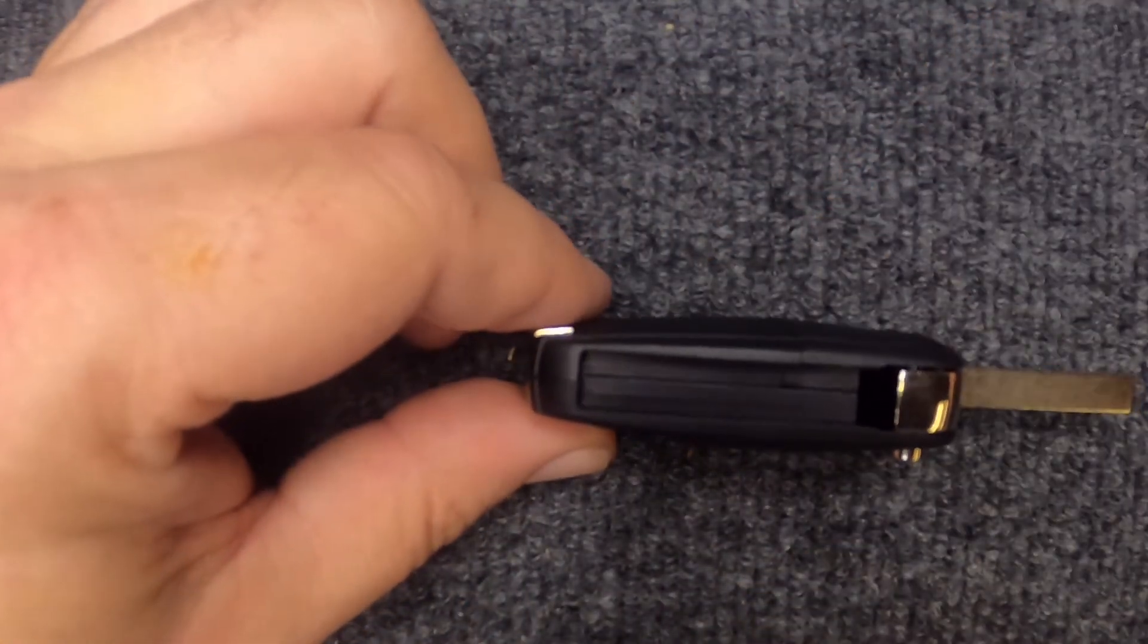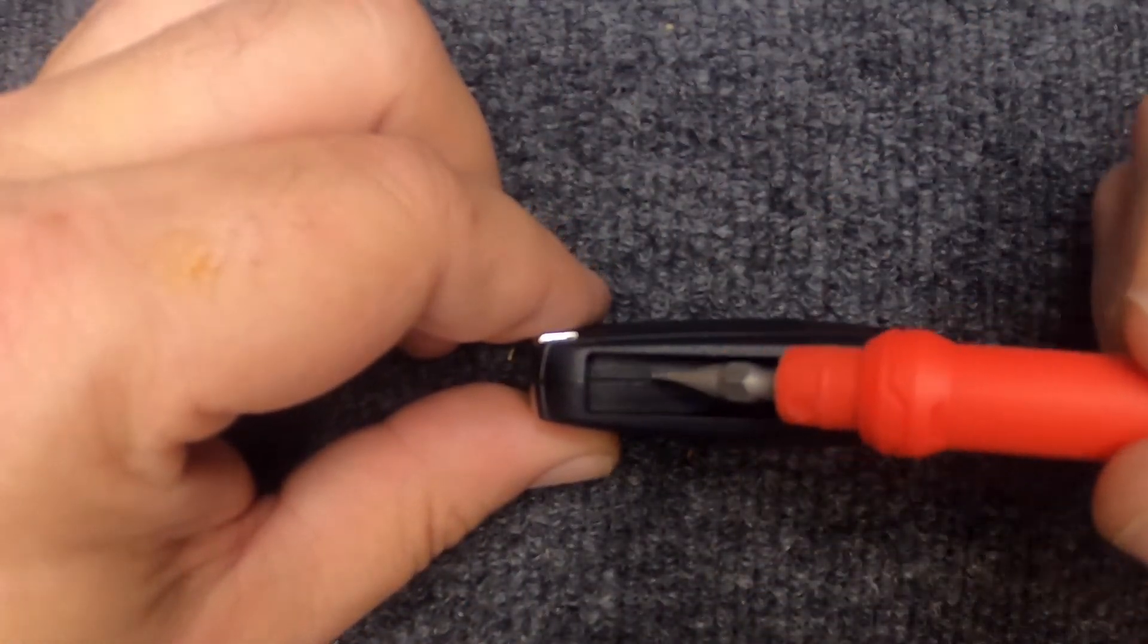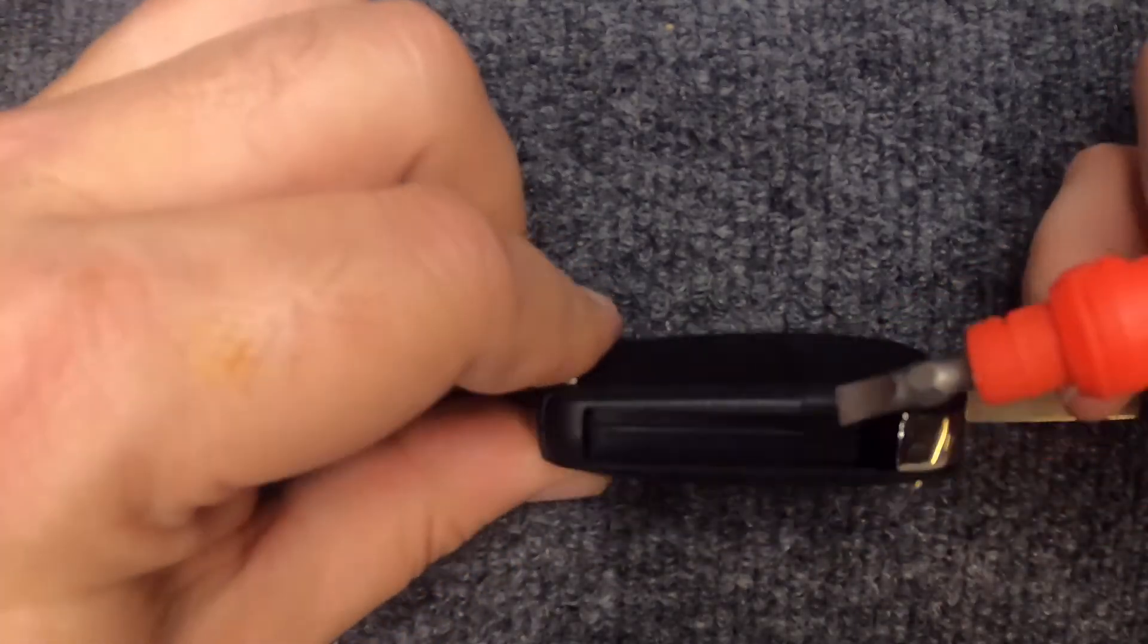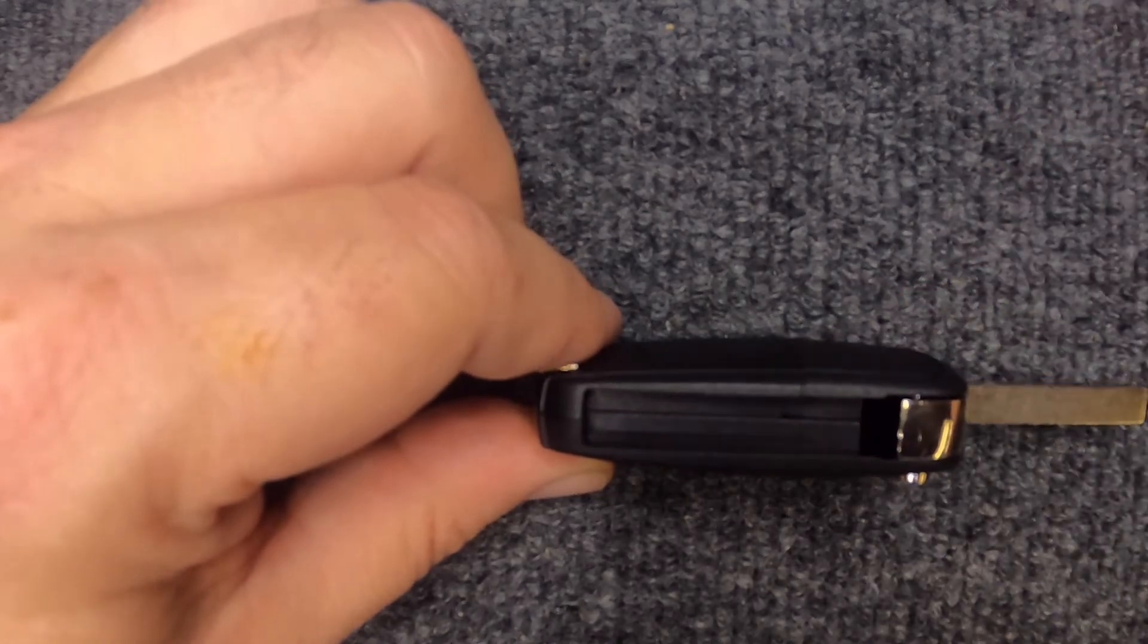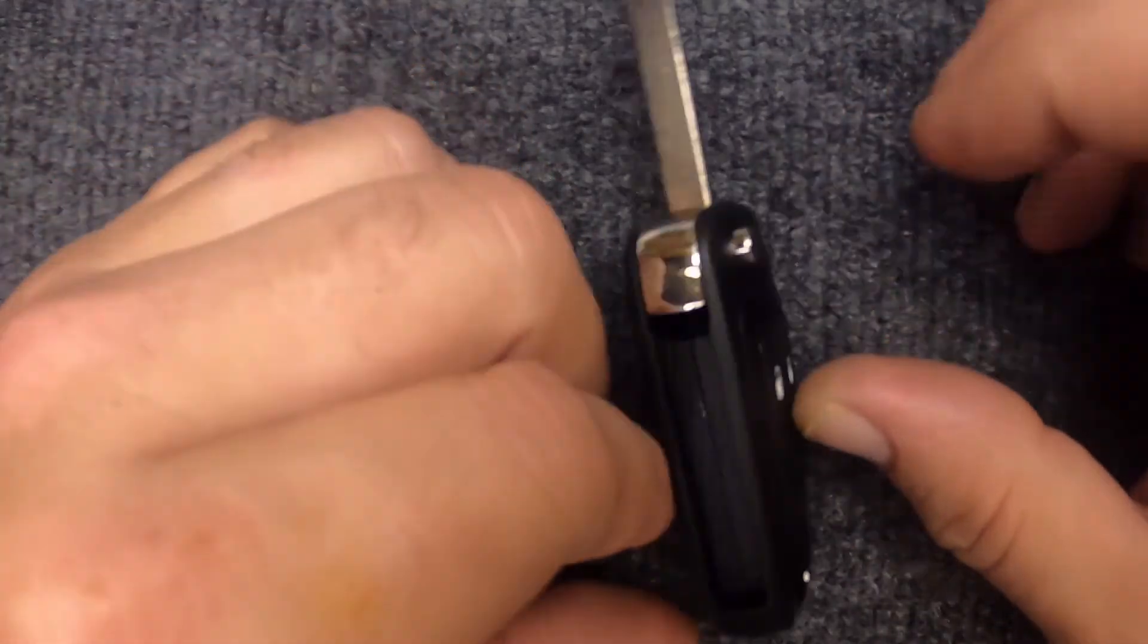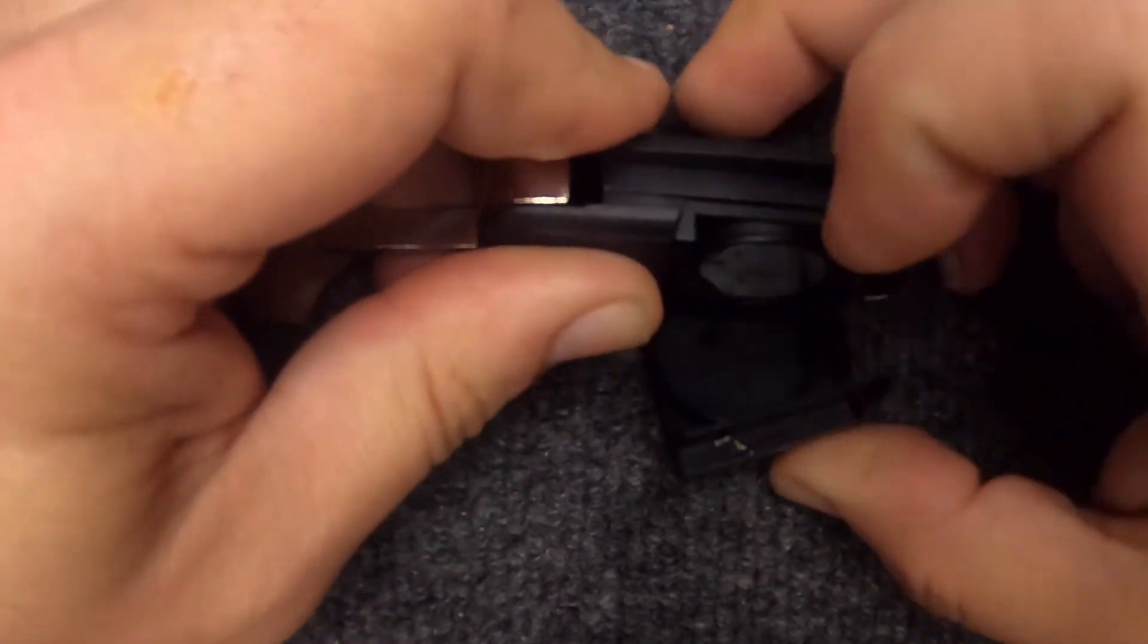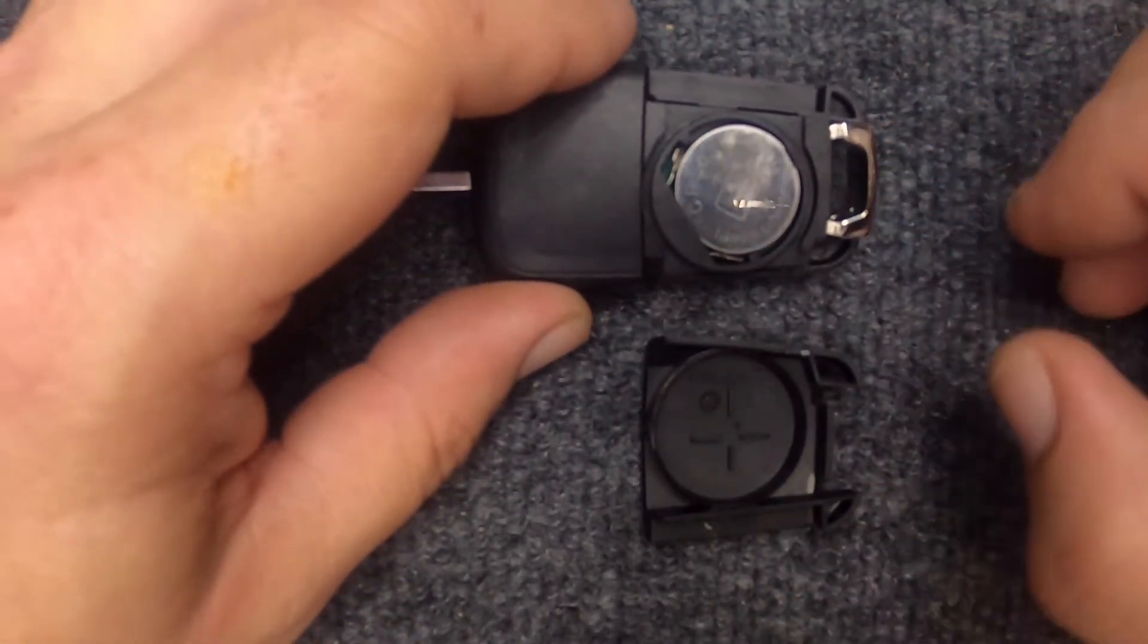Now that it's open, you'll notice inside here you'll have the seam with two halves and you'll see a little line here. This corner right here is where you want to go ahead and put a little bit of pressure with your finger. Let's go ahead and push outward and you notice the cover just came off.